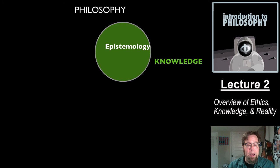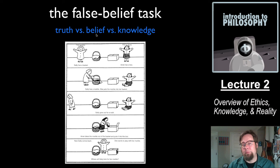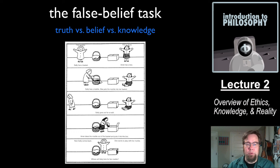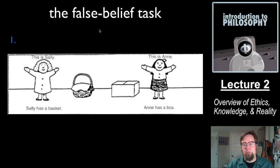Let's move on to epistemology, the branch of philosophy that has to do with knowledge. Some of the most important things to establish early on are the differences between three very important concepts: truth, belief, and knowledge. They're closely related but nonetheless different. One way to get a handle on the difference between them is through something that comes from child psychology — a task known as the false belief task.